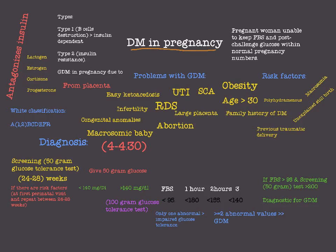The definition of DM in a pregnancy is any pregnant woman that is unable to keep fasting blood sugar and post-challenge glucose within normal pregnancy numbers. In any pregnancy we have fasting blood sugars and post-challenge glucose values; if the woman is unable to keep these values in range, then we have DM in a pregnancy.